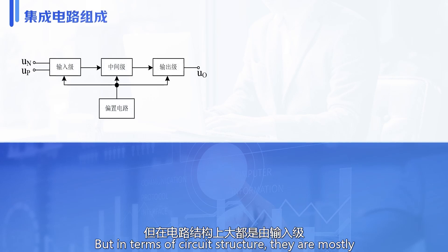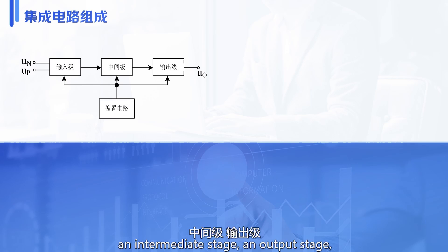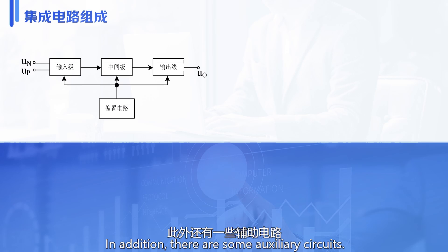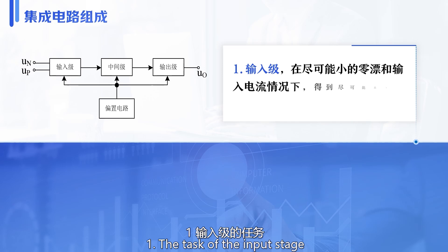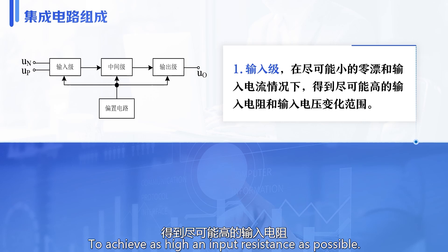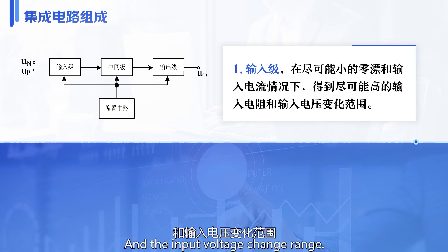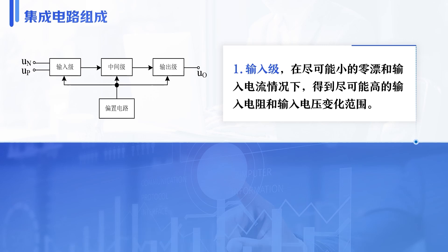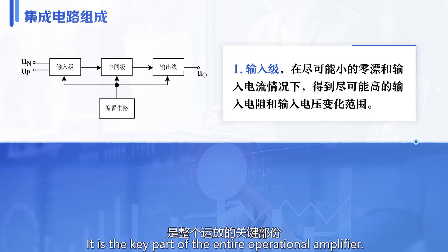There are many types of integrated operational amplifiers, but in terms of circuit structure, they are mostly composed of four parts: an input stage, an intermediate stage, an output stage, and a bias circuit, plus some auxiliary circuits. The task of the input stage is to achieve as little zero drift and input current as possible, as high an input resistance as possible, and a wide input voltage range. It is composed of a differential amplifier circuit with a constant current source, and is a key part of the entire operational amplifier.